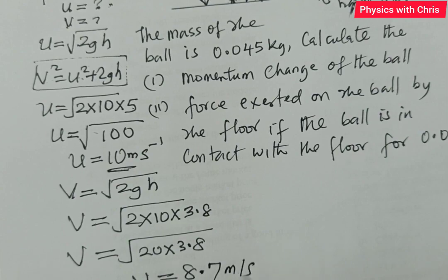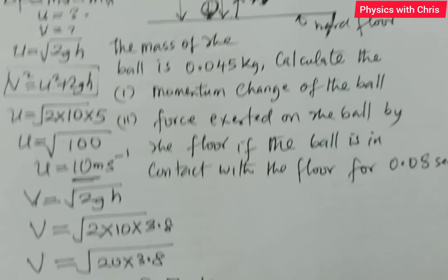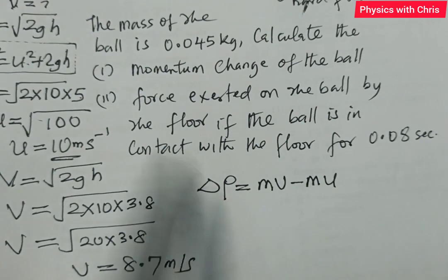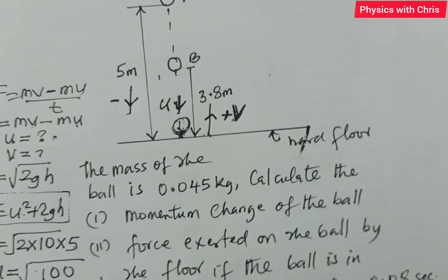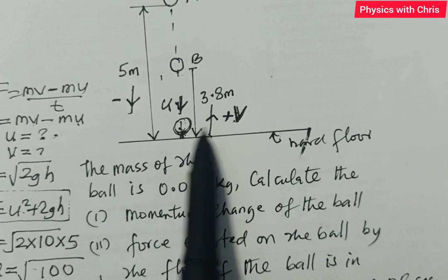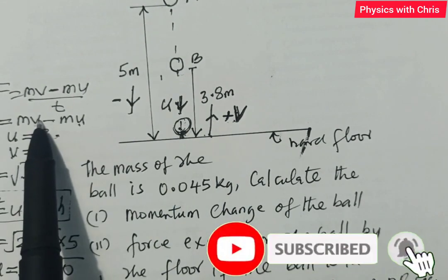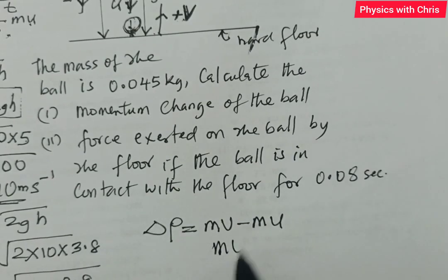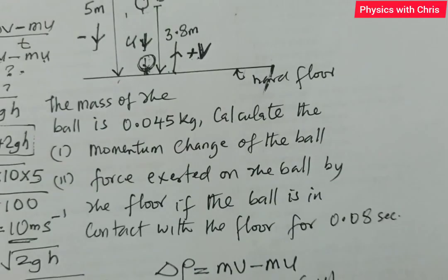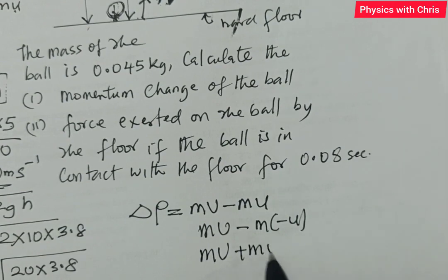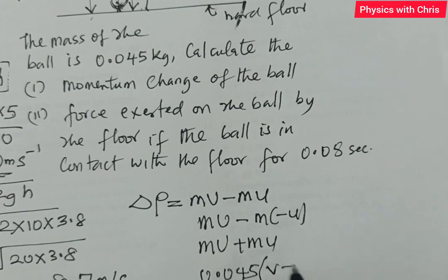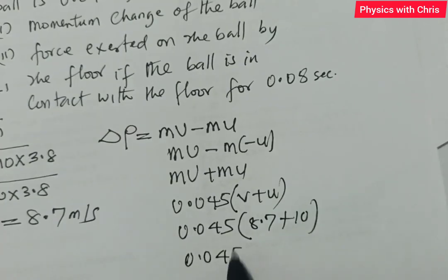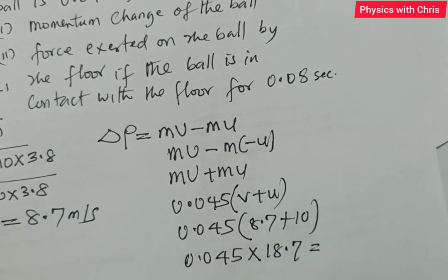I can now find the momentum change: final momentum minus initial momentum. Taking upward as positive, the final velocity is +8.7 m/s and the initial velocity is negative (downward), so momentum change = mv − m(−u) = m(v + u). With mass m = 0.045 kg, that gives 0.045 × (8.7 + 10) = 0.045 × 18.7 ≈ 0.84 kg·m/s. That is the momentum change of the ball.